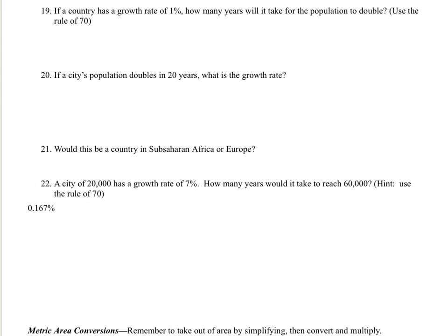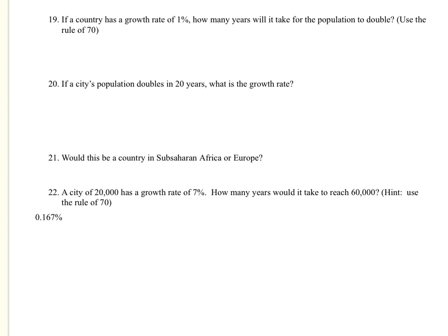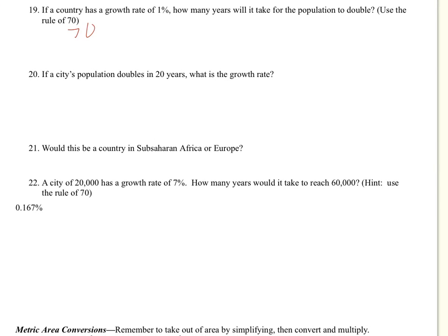Going on to number 19, if a country has a growth rate of 1%, how many years will it take for the population to double? So the rule of 70. The AP test really likes the rule of 70, but it doesn't always say use the rule of 70. In fact, it never says use the rule of 70. So the rule of 70 is that 70 over R equals your doubling time. Okay, so for us, 1%, so 70 over 1%. This is assuming that R is in a percentage already, and it's going to come out as years. It's one of those kind of interesting formulas. And so our answer is going to come out at 70 years.